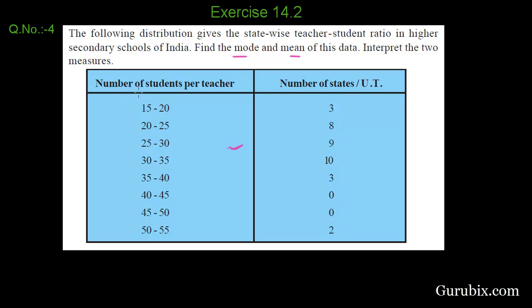In this table, there are two columns. The first column is number of students per teacher, and the second column is number of states or UTs, which is our Fi.